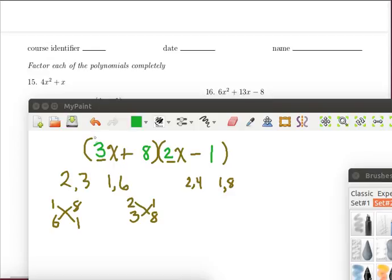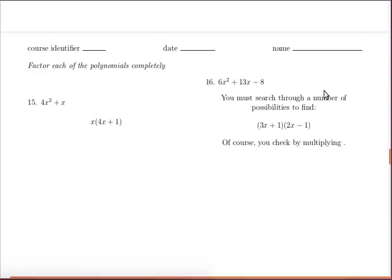And notice we've got things worked out so that of course the 3x times the 2x will be a 6x squared. The 8 times the minus 1 will give me the minus 8 and now we work things out so the middle term works out fine. So we check through a number of possibilities to find how it factored and of course we check by multiplying.